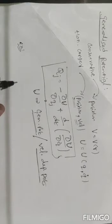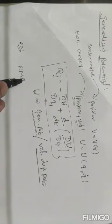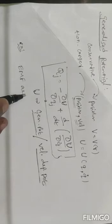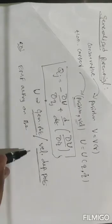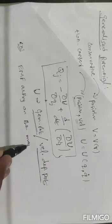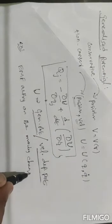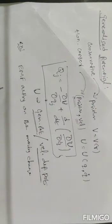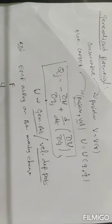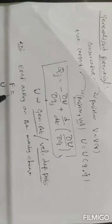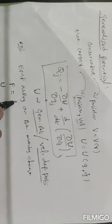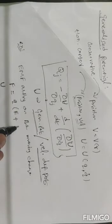Electromotive force acting on a moving charge. From this formula you can see: F = Q into (E + v cross B).